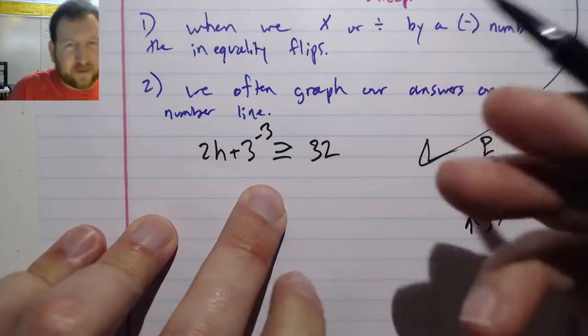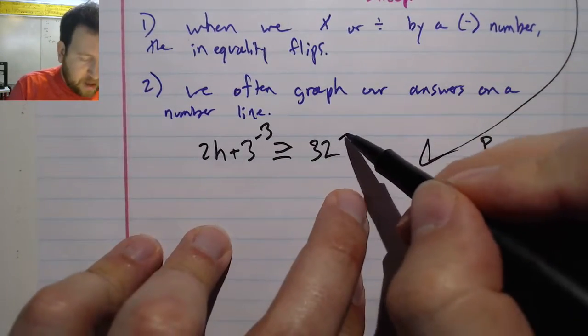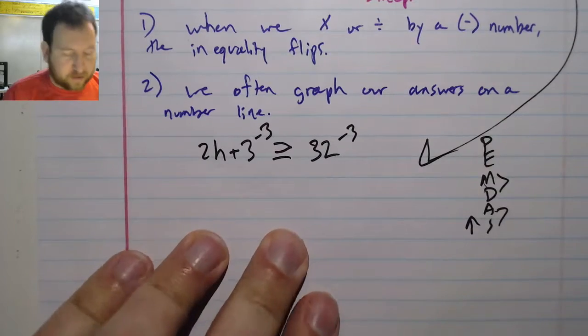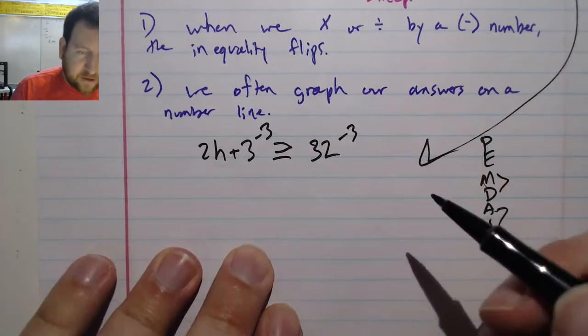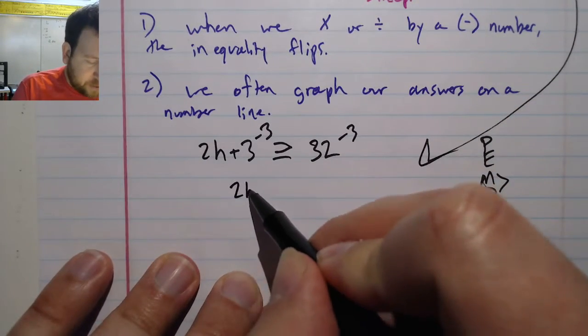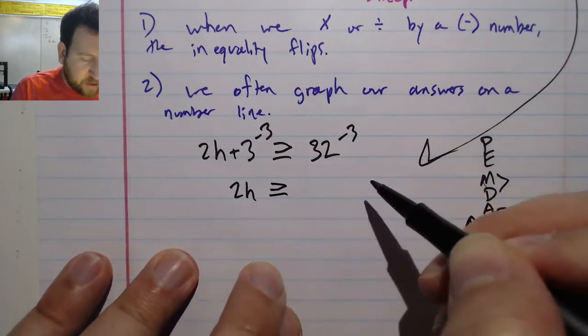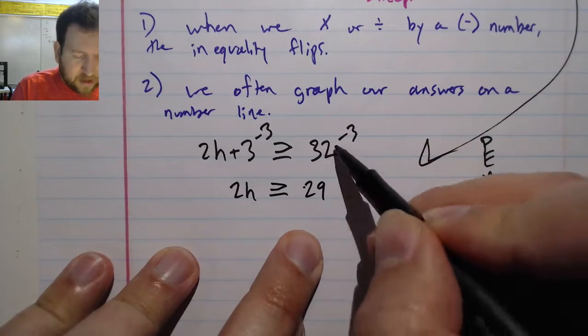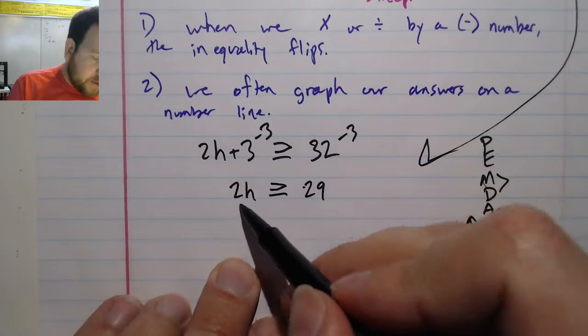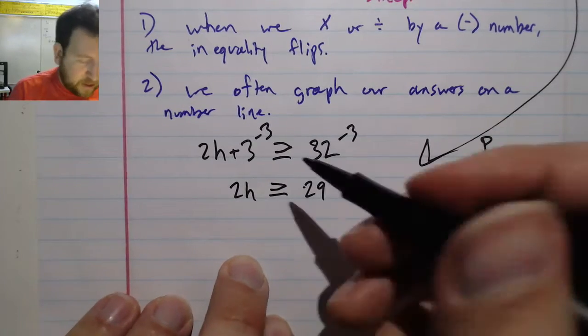Okay, I have a plus 3 over here, so to get rid of it I'm going to do a minus 3, and I have to do a minus 3 to both sides. Plus 3 minus 3 is zero, so I can rewrite this as 2h is greater than or equal to 29 because I subtracted 3. So now I have 2h, trying to isolate my h.